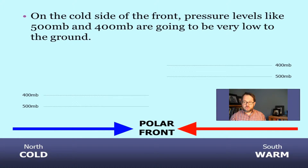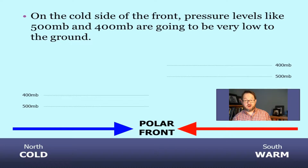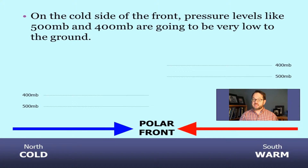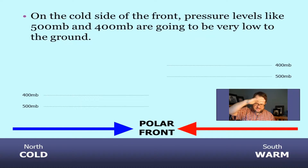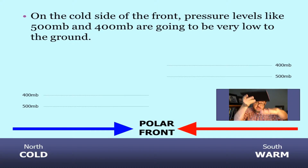On the cold side, the thickness of layers is less because the average temperature of those layers is less. The cold air mass is at the ground, but the average temperature of the layer between 1,000 millibars and 500 millibars is not very high at all. So 500 millibars is going to be closer to the ground on the cold side than on the warm side. And 400 millibars will also be closer to the ground on the cold side, because if we make the layer between 1,000 and 500 millibars less thick, all the layers above it get closer to the ground too — it's like a stack.